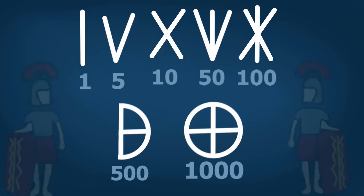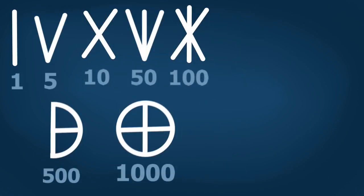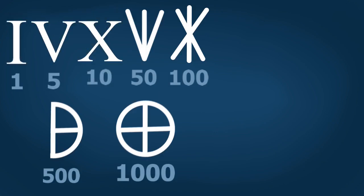As time passed, the Romans started forgetting about the Etruscan origin. They looked at the symbols for one, five, and ten and started thinking they were letters — I, V, and X — because they were so similar. Five hundred was also so similar to the letter D, so it became D. And fifty, one hundred, and one thousand eventually became letters too.